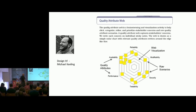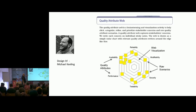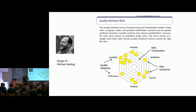Those scenarios turn the dials on the quality attributes — closer to the center is stronger, closer to the outside is weaker. You can see all the things that lead you to particular trade-offs. In one example, availability is very important to this system — more so than modifiability or performance — and security is quite important. As you map out scenarios you can see which quality attributes you tend to favor over others, because you're not going to be able to satisfy all of them simultaneously.